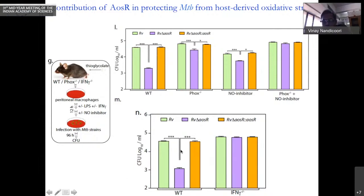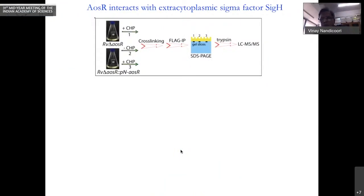Same thing we have shown using interferon gamma mutant, which is actually responsible for subjecting these cells to oxidative stress. So what it basically tells, this transcription factor seems to be playing a critical role through cysteine biosynthesis in protecting mycobacterium tuberculosis from host-induced oxidative stress.